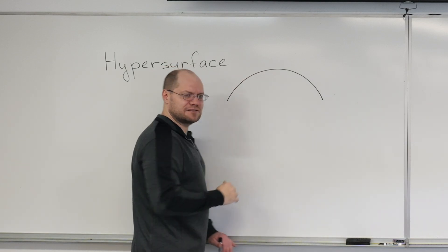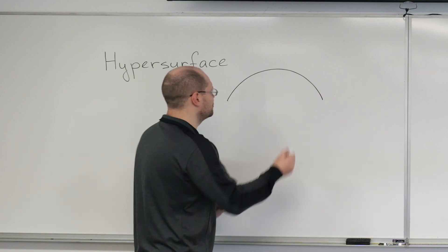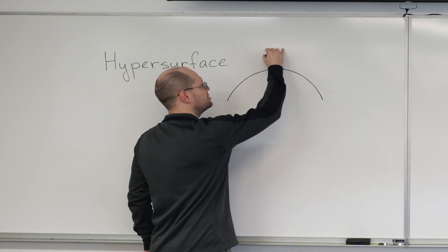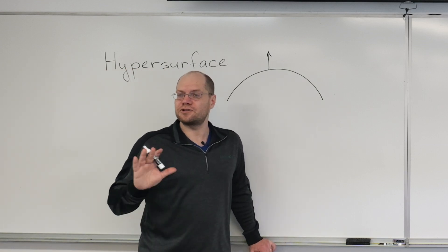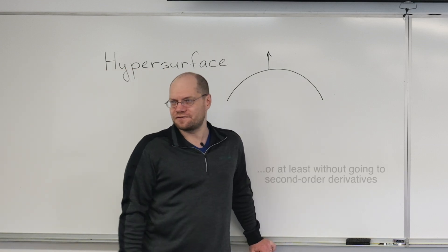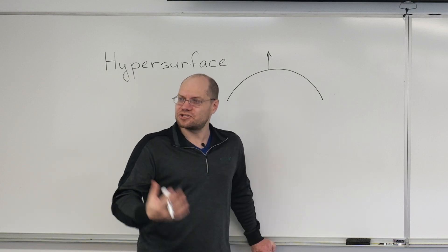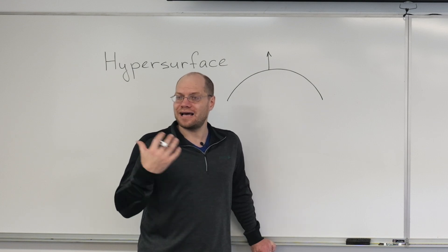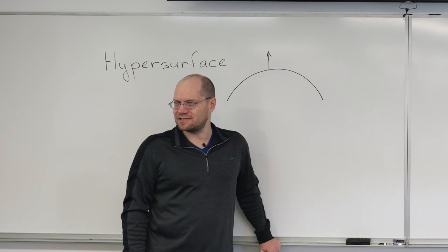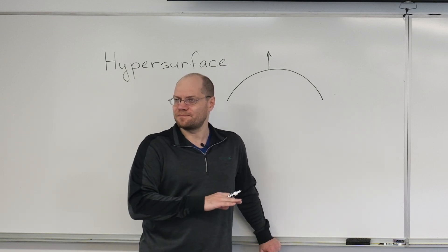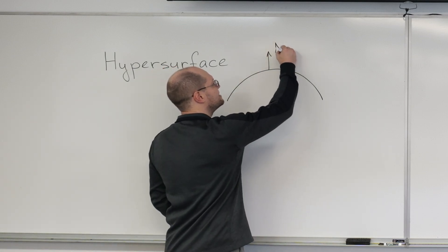When you're dealing with a hypersurface, you automatically have a normal direction because there's only one dimension left. And so here's the unit normal — I can just define it in pure geometric terms without going to differentiation. So for hypersurfaces, we have an extra element that we don't have for curves and surfaces in higher-dimensional spaces. Here we have it automatically.